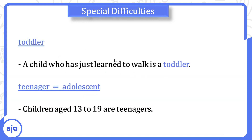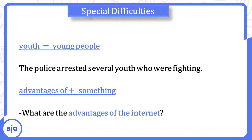What is the difference between 'toddler' and 'teenager'? A toddler is a child who has just learned to walk — طفل عنده من سنة لسنتين. A teenager — or adolescent — means a مراهق: children aged 13 to 19. Youth means young people — الشباب. Example: The police arrested several youth who were fighting.